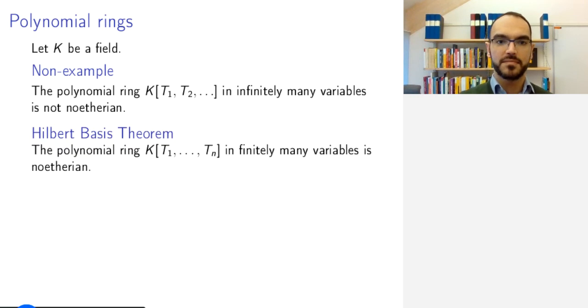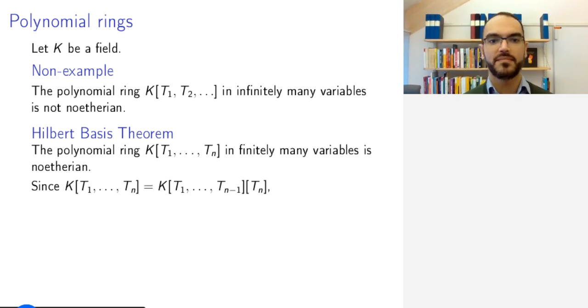Thankfully, the converse is true, namely that the polynomial ring in finitely many variables is Noetherian. To prove this, note that the ring in N variables, the polynomial ring in N variables, can be constructed inductively as the polynomial ring in one variable over the ring of polynomials in N minus 1 variables.